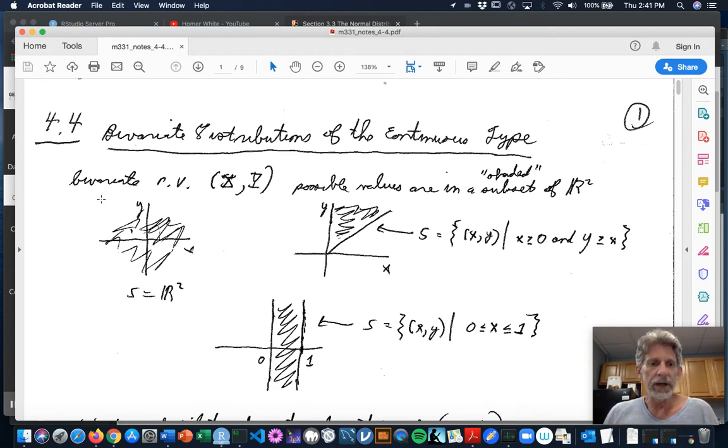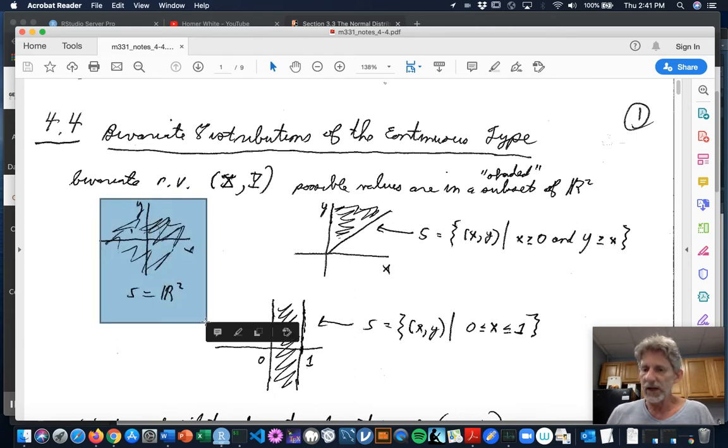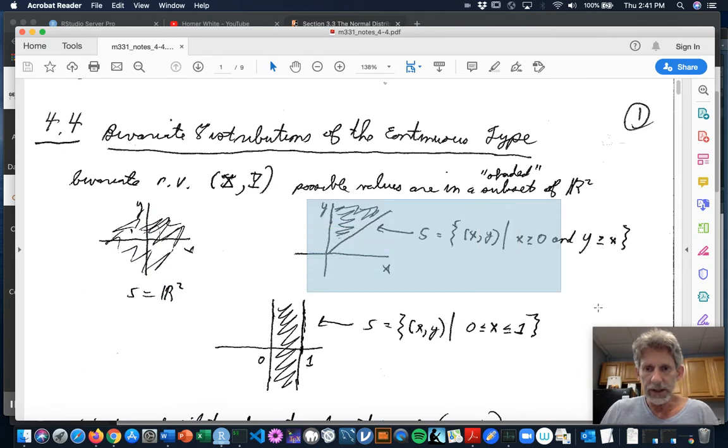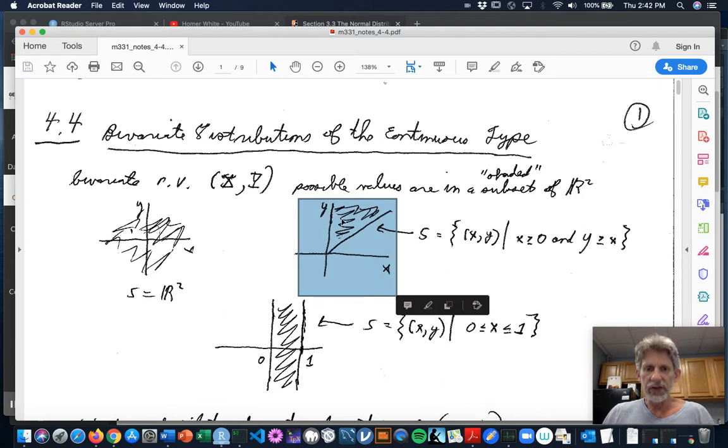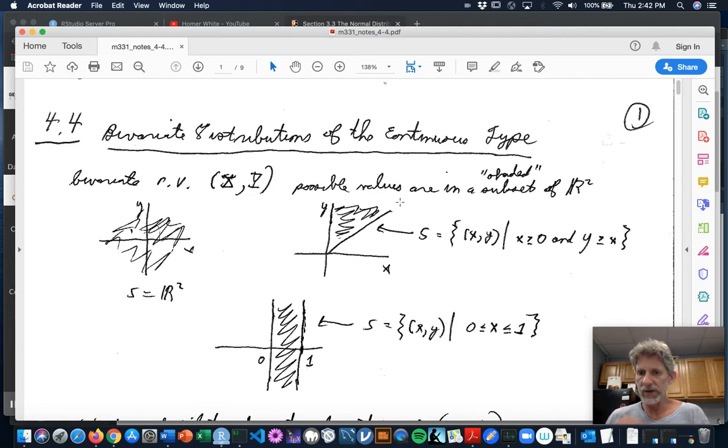So examples might be like maybe the sample space, the possible values is all of R2. X goes from minus infinity to infinity, Y can go from minus infinity to infinity. Or maybe the sample space is the set of all XY's where X is bigger than or equal to 0 and Y is less than or equal to X. If you think about that for a while, it's this shaded region here where that line that you see in this graph has equation Y equals X.